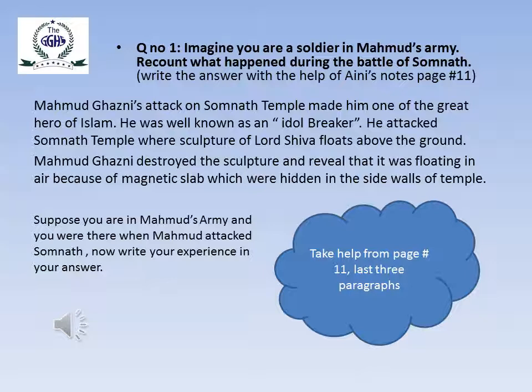Mahmood Ghazni's attack on Somnath Temple made him one of the great heroes of Islam. He was well known as an idol breaker. He attacked Somnath Temple where a sculpture of Lord Shiva floated above the ground. Mahmood Ghazni destroyed the sculpture and revealed that it was floating in air because of magnetic slabs which were hidden in the side walls of the temple. For more explanation, read Annie's Notes on page number 11, last three paragraphs, and then answer your question.